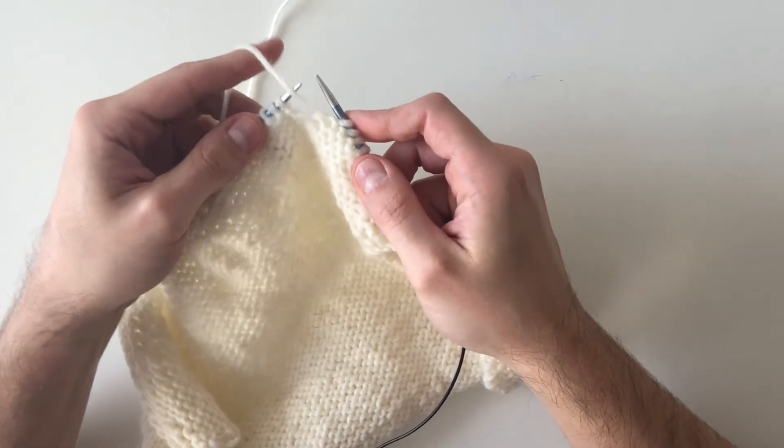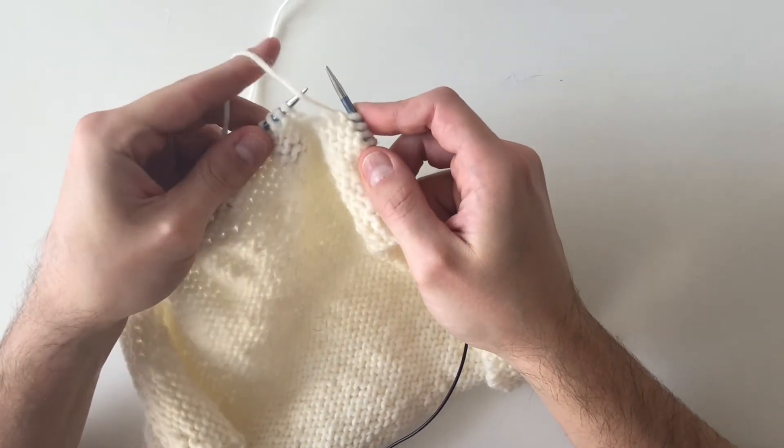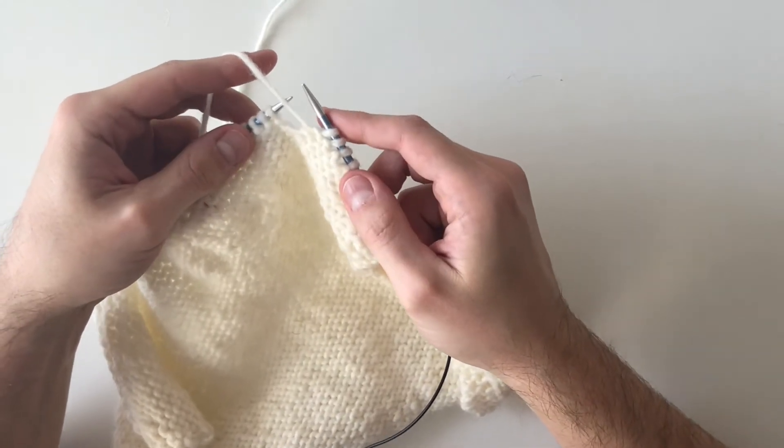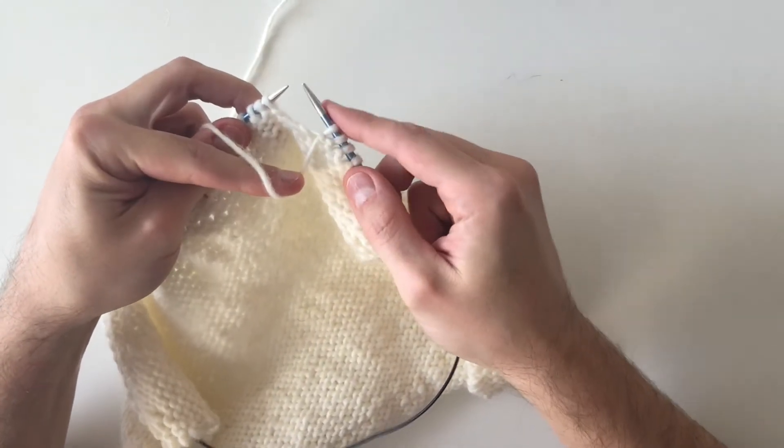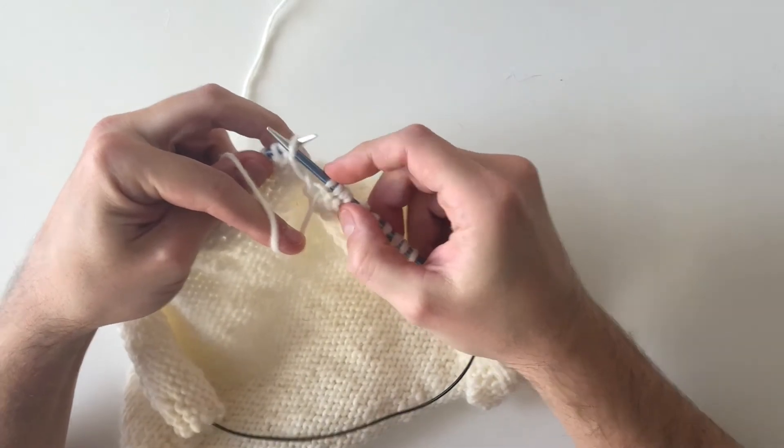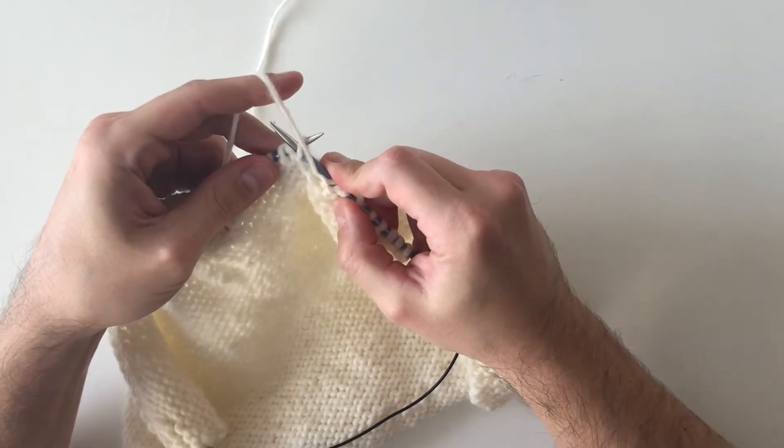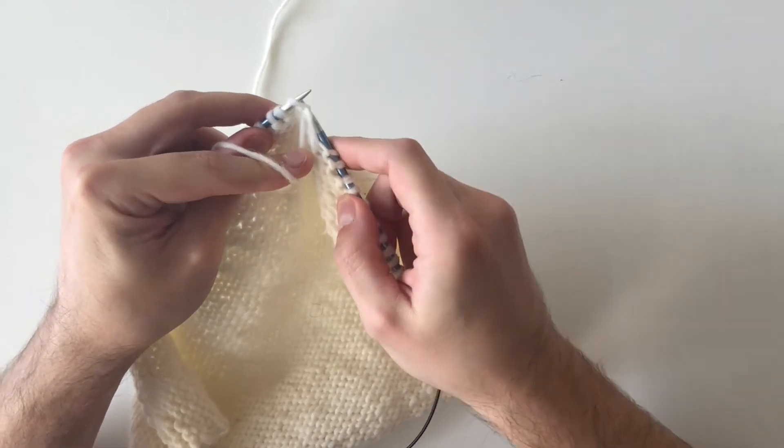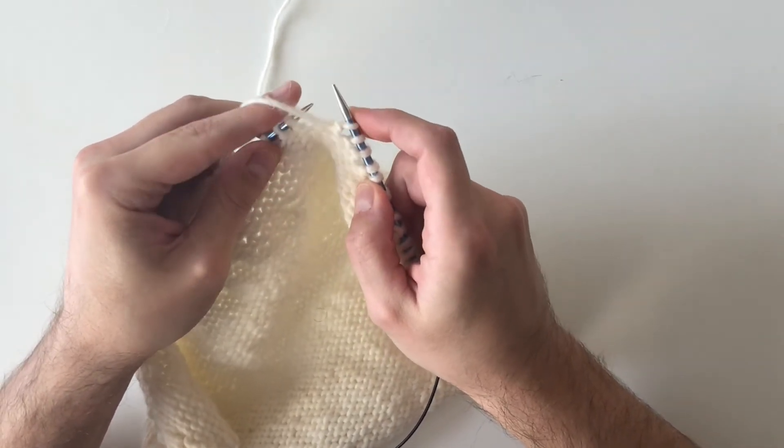With your working yarn, you need to be able to go down, up, down, up - it really helps. So let's try: go down with your working yarn, insert the right needle into the stitch, go up and down with your working yarn, and then simply come out of the stitch and drop it with your right needle.